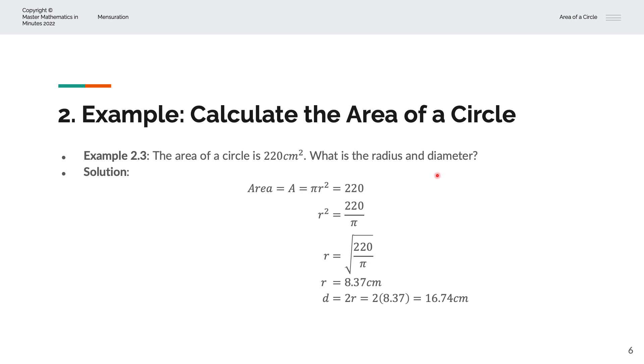To find the diameter, d, we multiply the radius by 2. So we have 2 times 8.37 from above, and that simplifies to 16.74 centimeters.